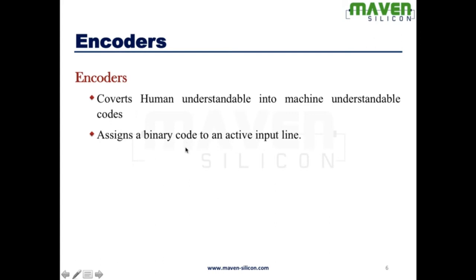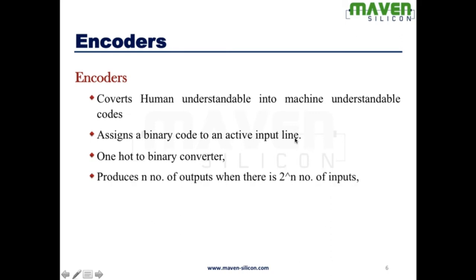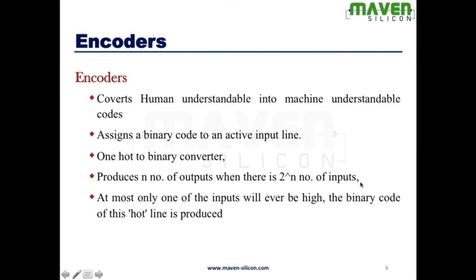An encoder assigns a binary code to an active input line — this is how it fundamentally works. It acts like a one-hot to binary converter. Functionality-wise, it produces n number of outputs when there are 2 to the power n number of inputs.